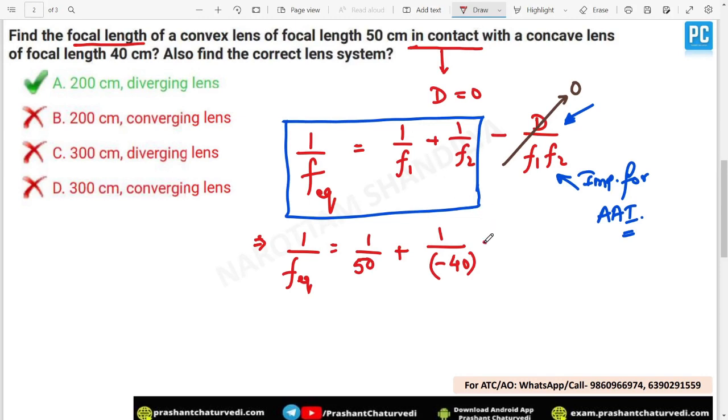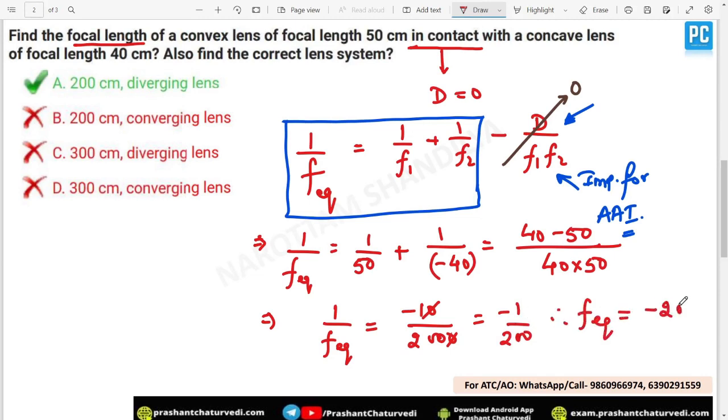This will be the simple calculation. Simply you can take the LCM 40 into 50, and this will be 40 and this will become minus 50. 1 upon f equivalent will be minus 10 divided by 2000. This will be minus 1 upon 200. So f equivalent will be equal to minus 200 centimeter.